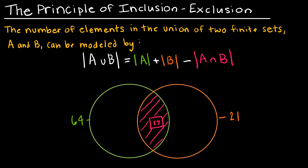Let's take a look at why it works. The principle of inclusion-exclusion says that instead of finding each section of our Venn diagram separately, I can just take the cardinality of set A plus the number of elements of set B minus the intersection, and that should give me all of the elements in the union.